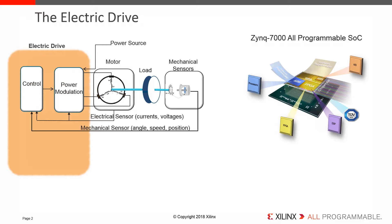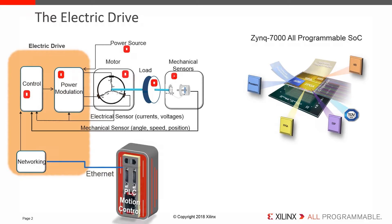An electric drive is an ensemble of systems connected together for the purpose of motion control. These systems are typically made up of five main functional blocks. They are the power source, power converter, motor, mechanical load, and controller. The controller incorporates both a sensing unit and a control unit.